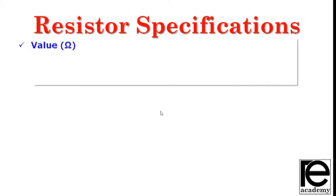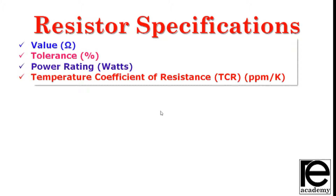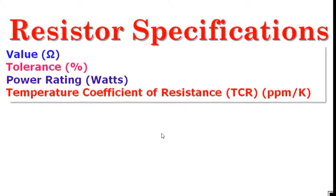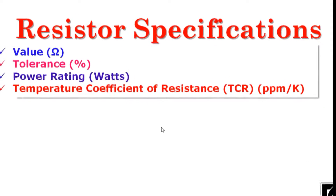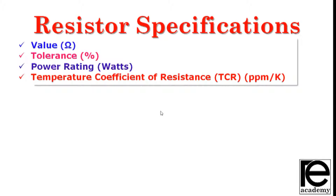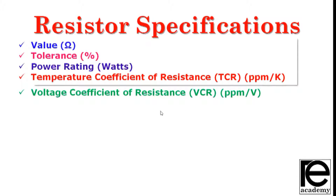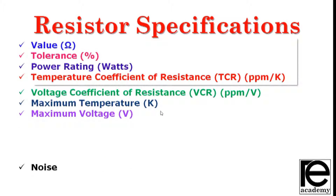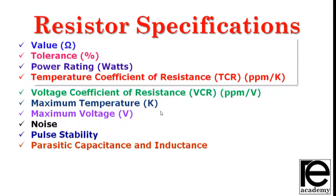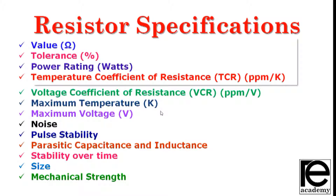The characteristics of a resistor include: the value of the resistor, tolerance of the resistor, power rating of the resistance, temperature coefficient or TCR of the resistance, voltage coefficient of resistance or VCR, maximum temperature, maximum voltage, noise, pulse stability, parasitic capacitance and inductance, stability over time, and size and mechanical speed.